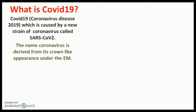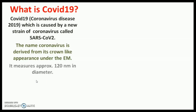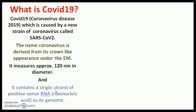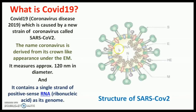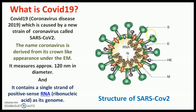The name coronavirus originated from the fact that the virus appears like a crown under the electron microscope, and it measures about 120 nanometers in diameter. Its genome is made up of a positive single-strand RNA.